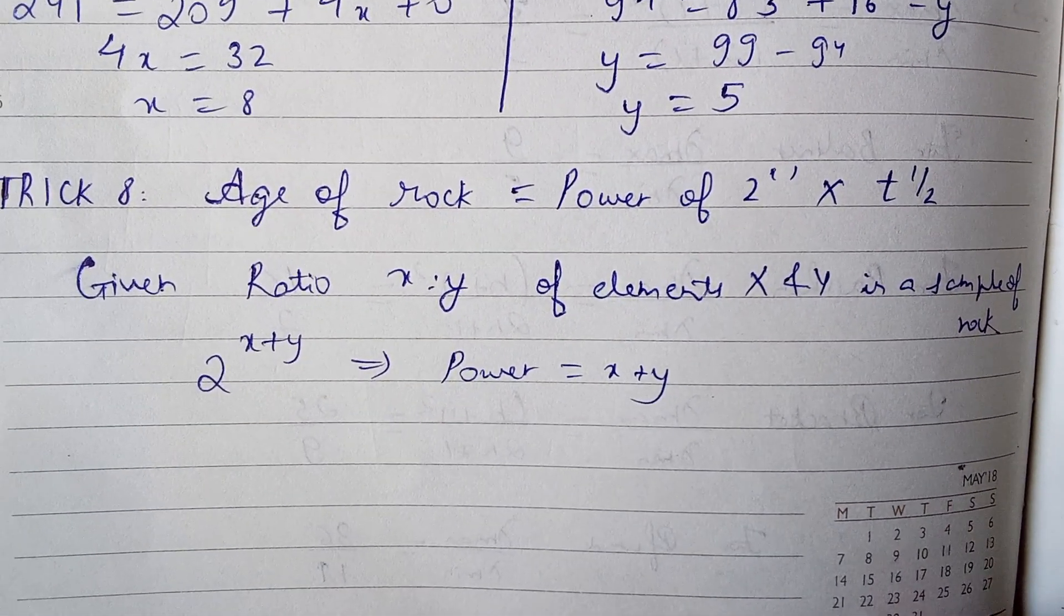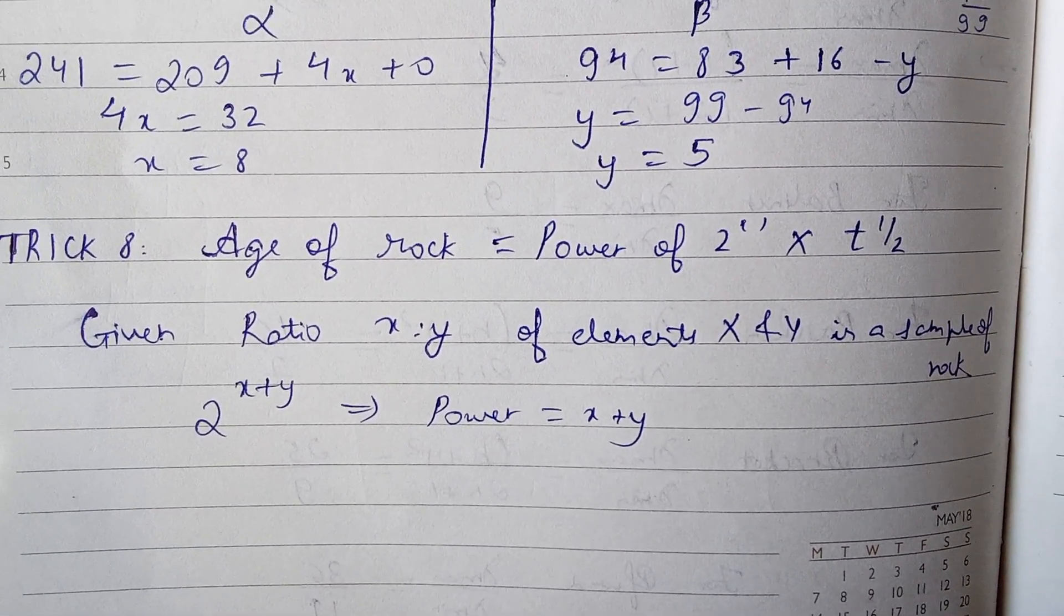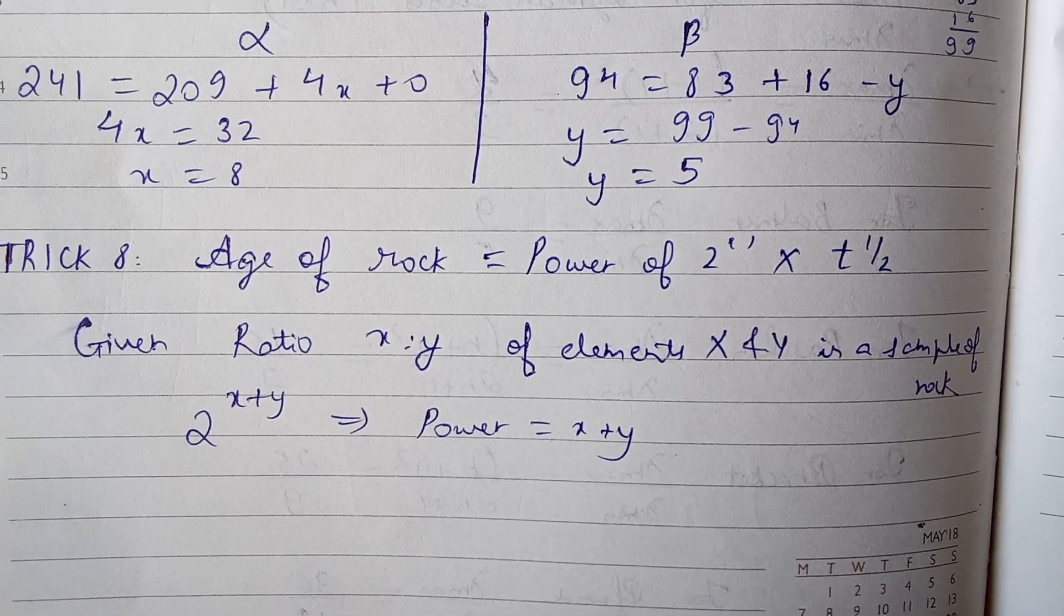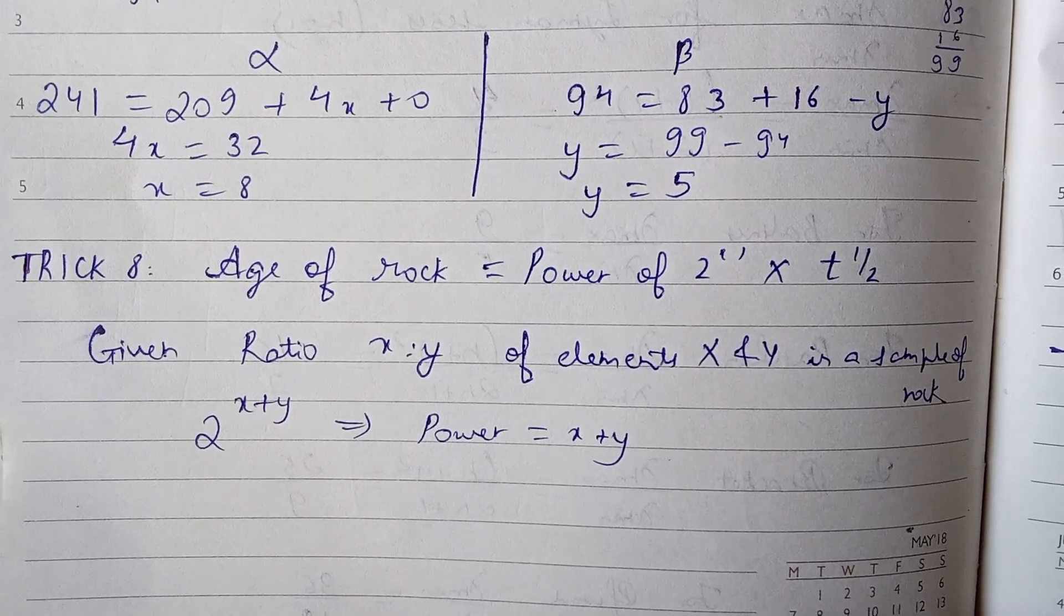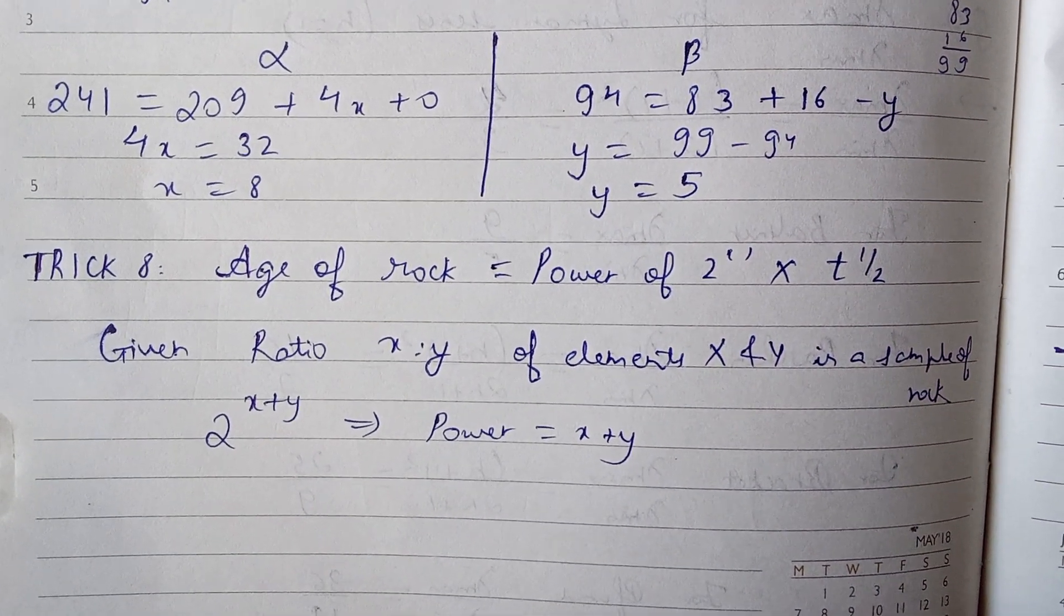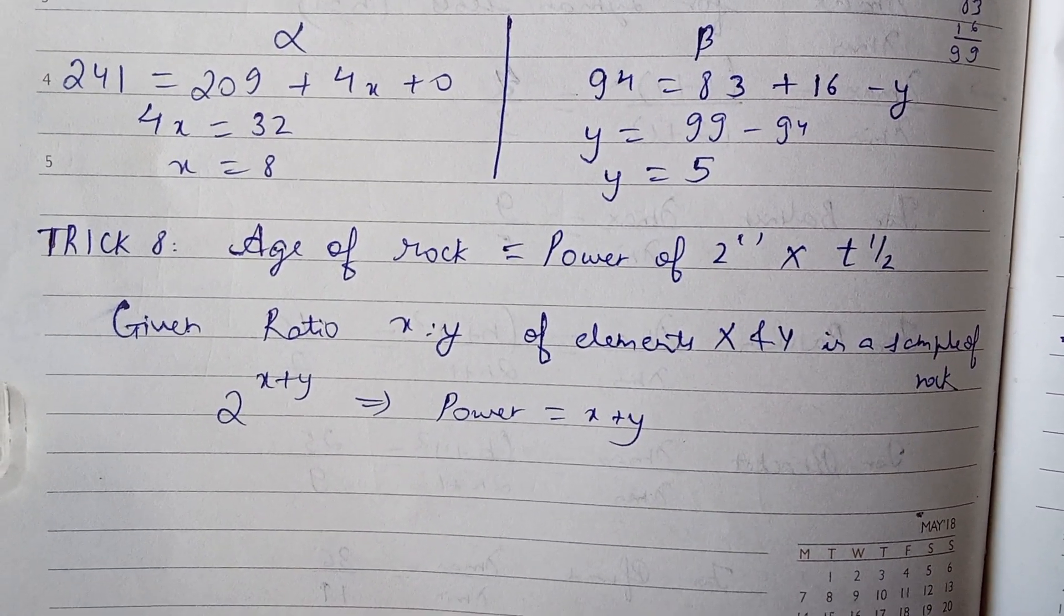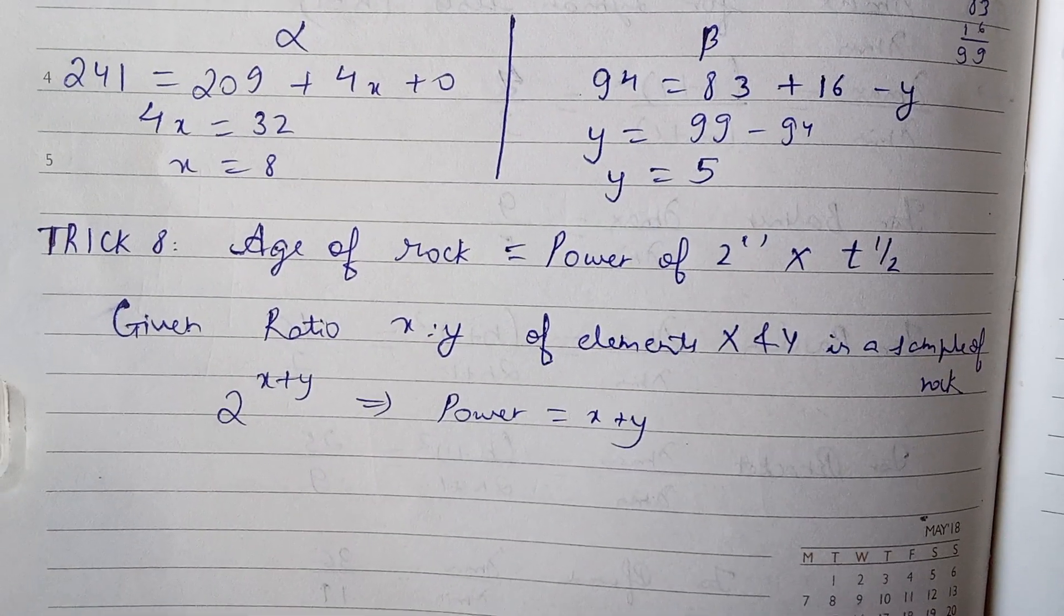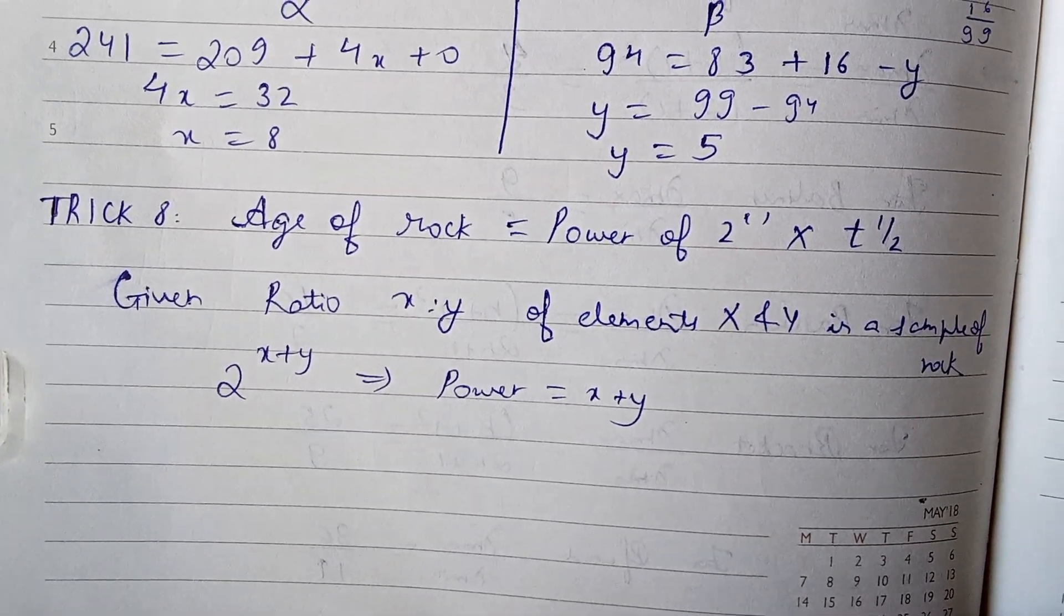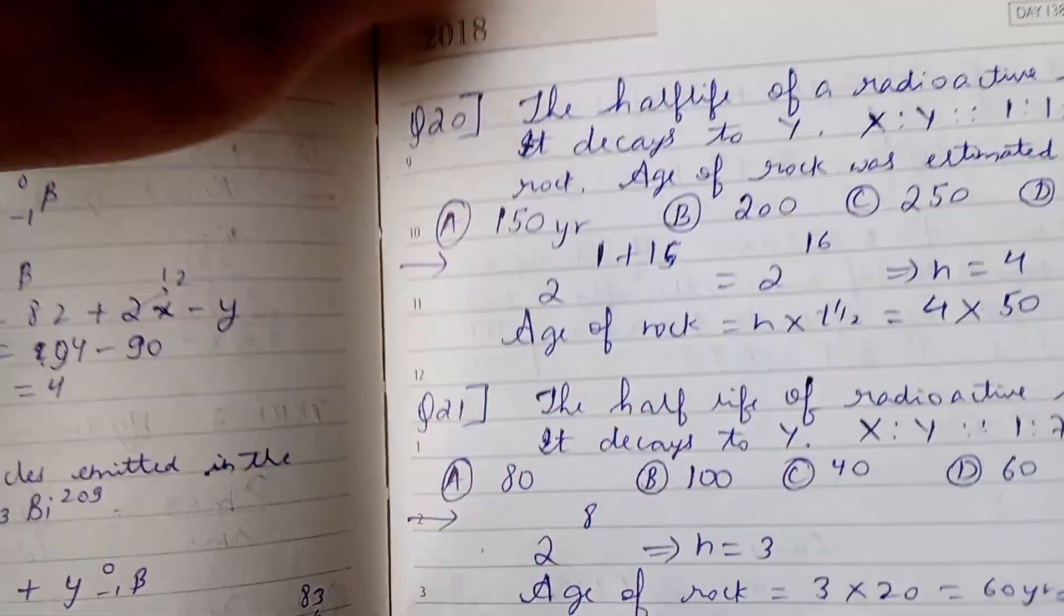Hello, so this is basically trick number 9. When we're asked to find the age of rock equal to power of 2 to the power of something times t½ (half-life), we are given the ratio x:y of elements x and y present in a sample rock. So 2^(x+y) equals the power (x+y).